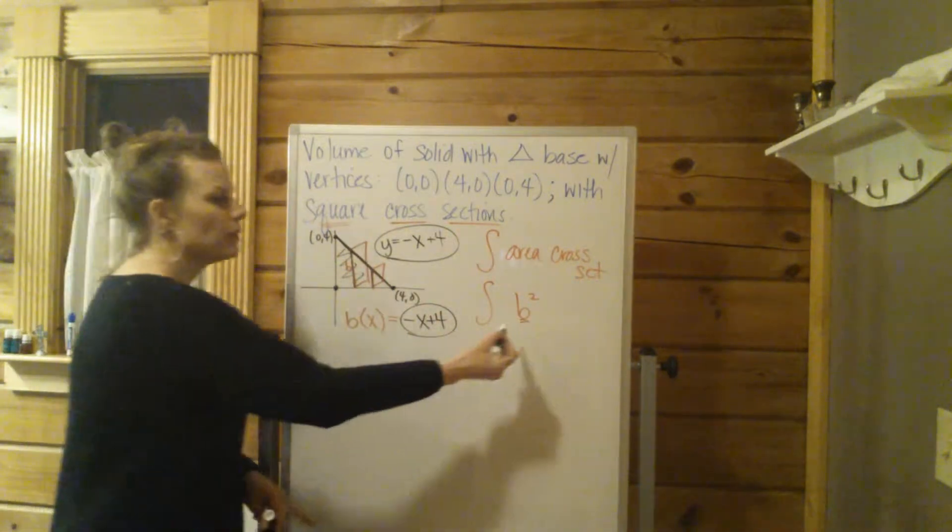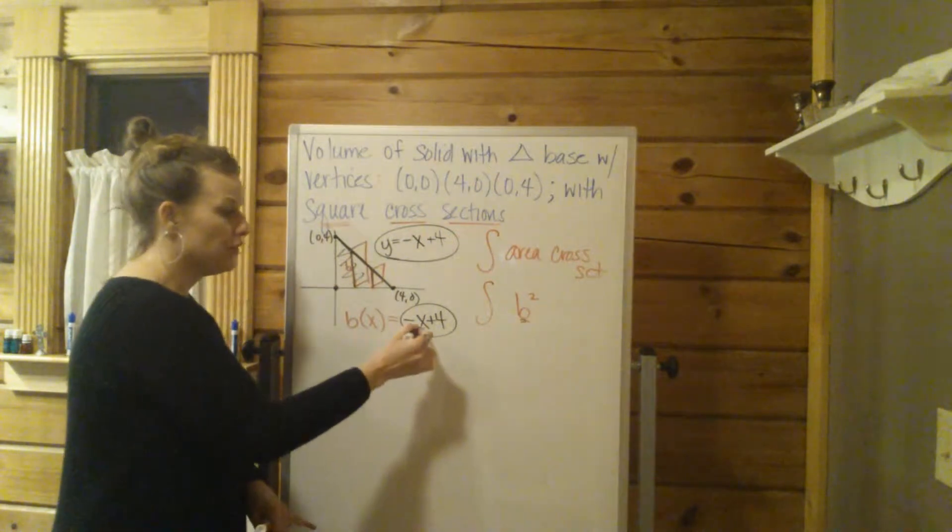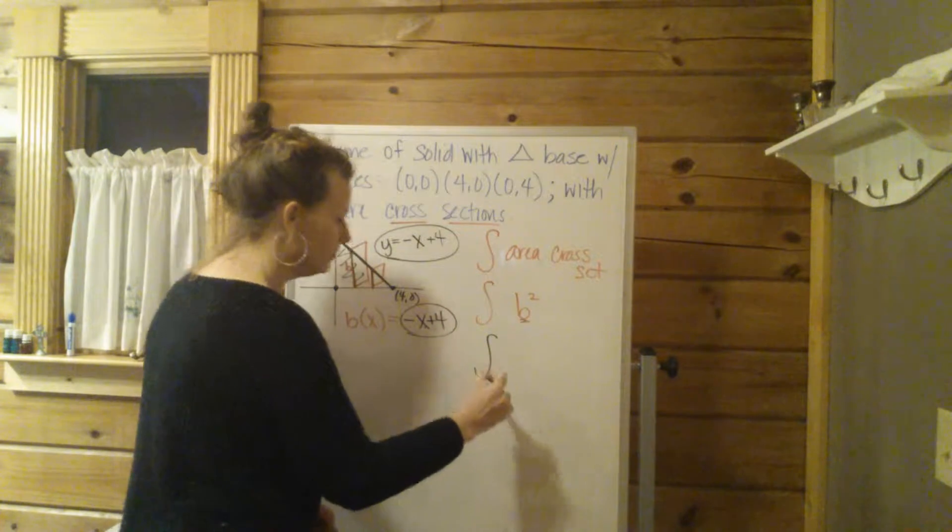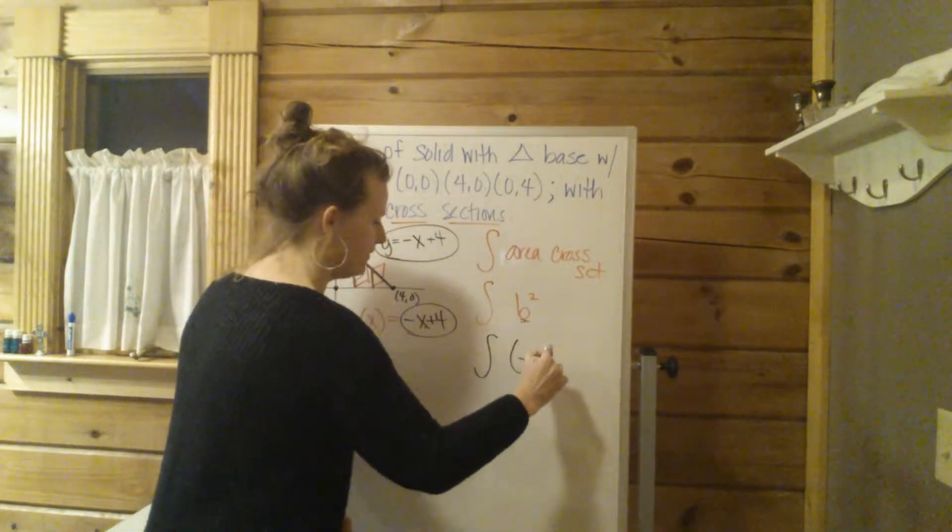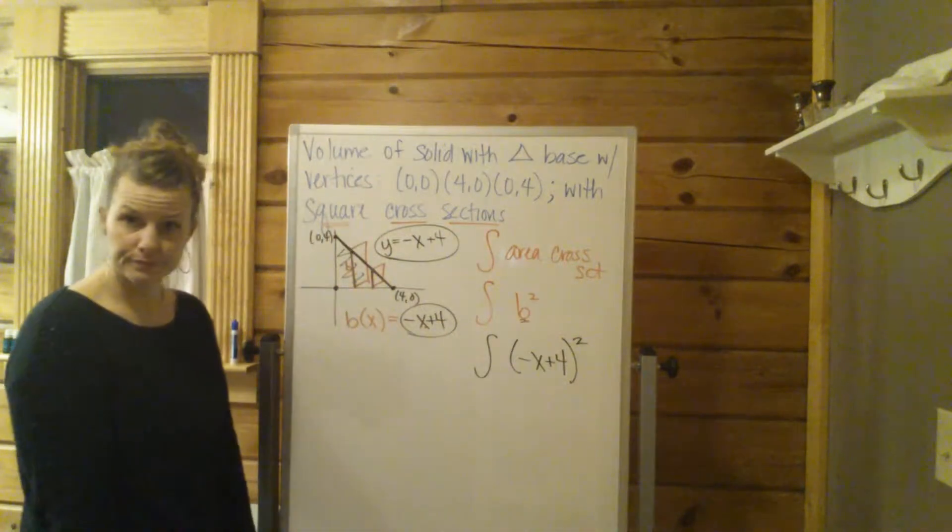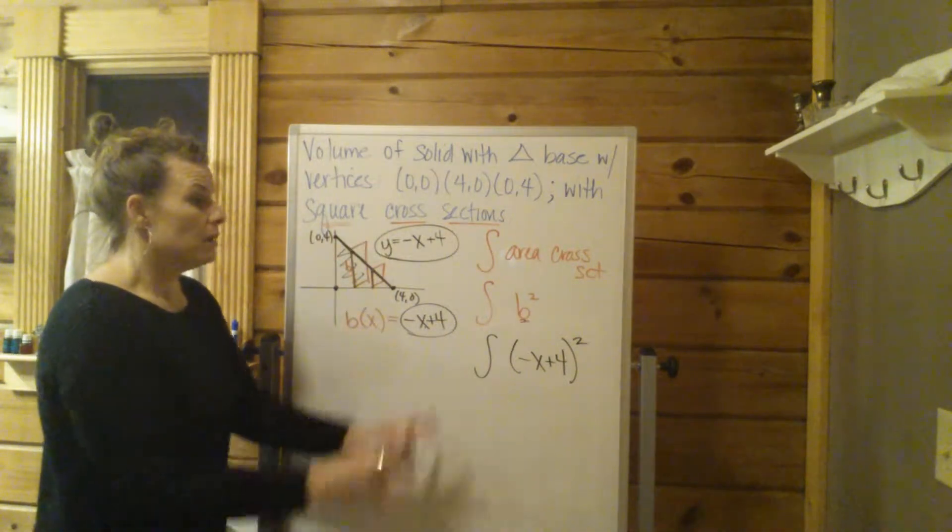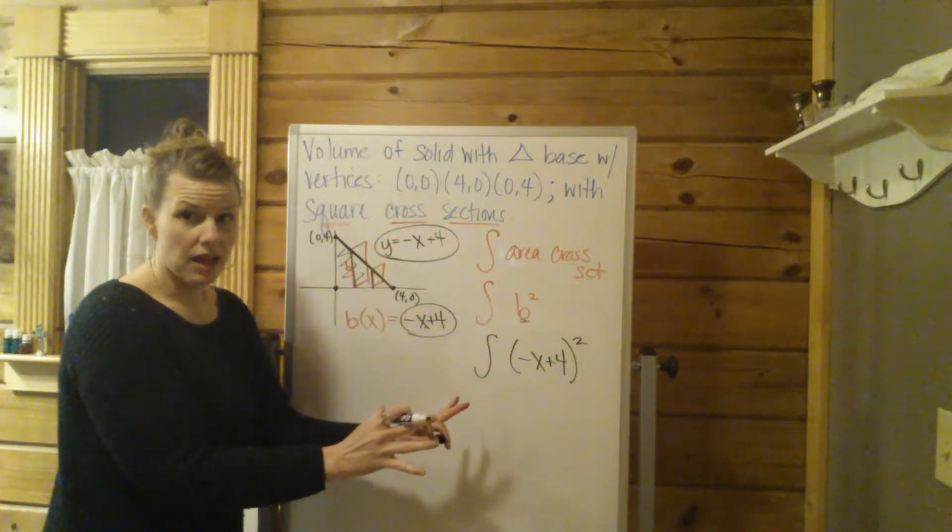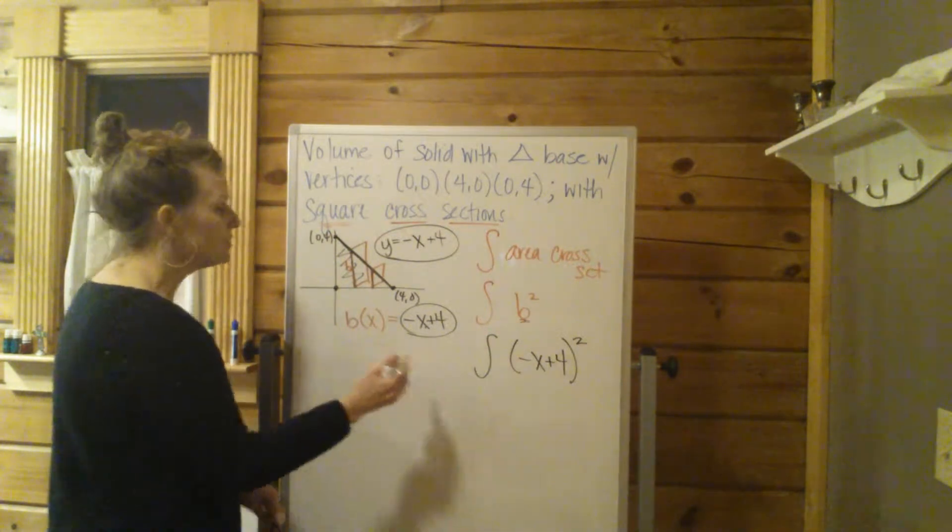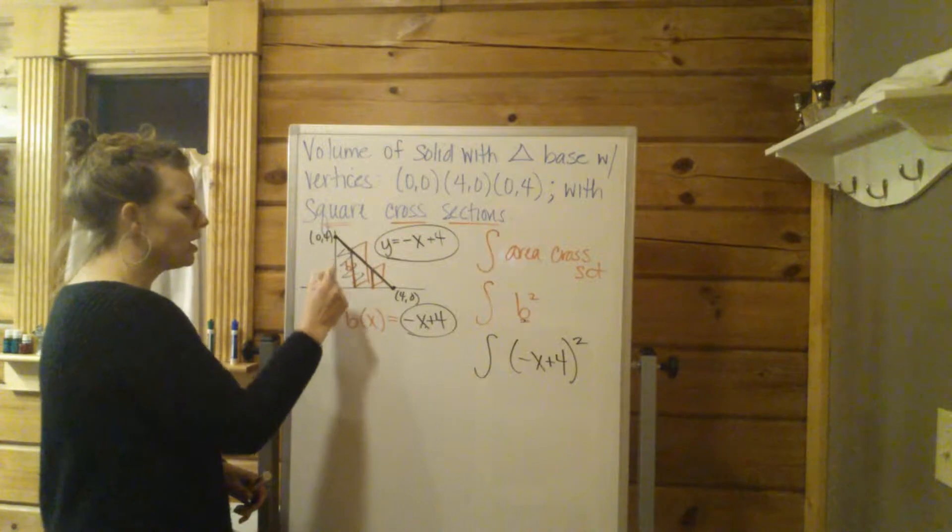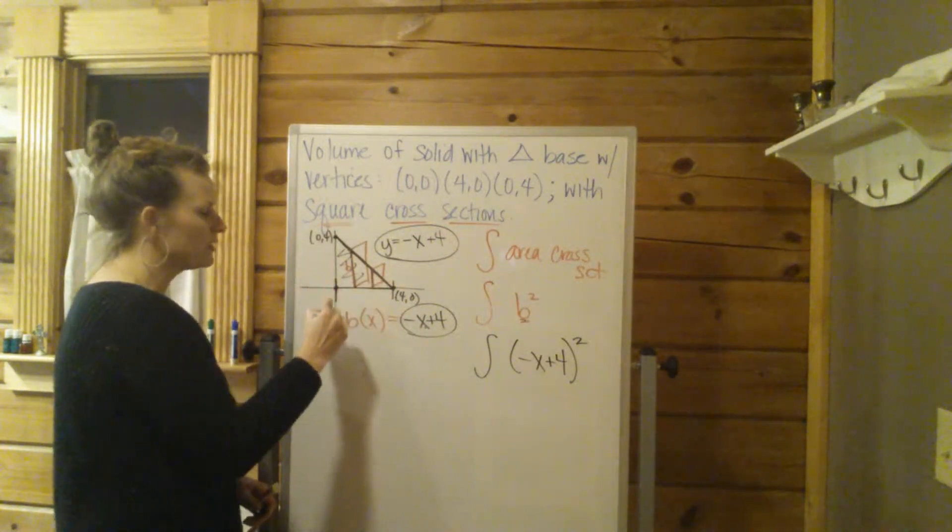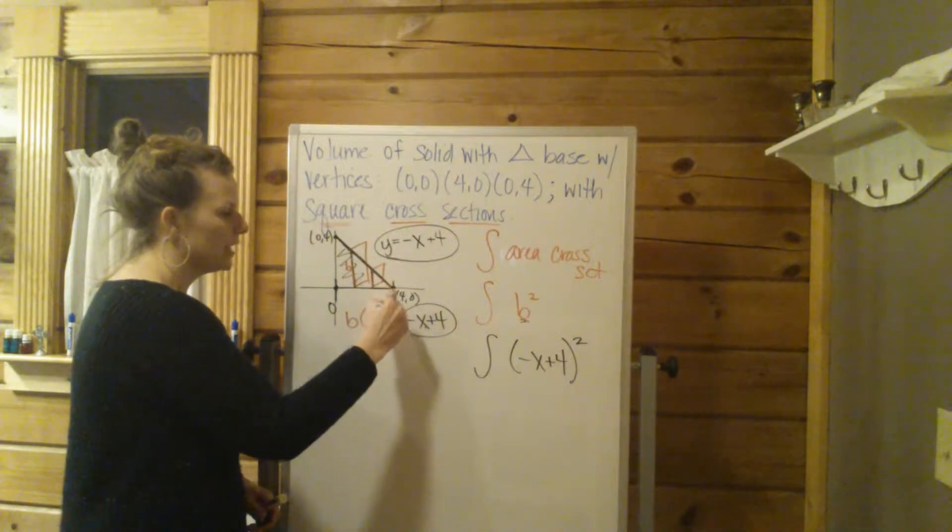So now we replace this b with this x expression. So we're going to have the integral of negative x plus 4 squared, right? Pretty much done. The only thing left to do is find these bounds.